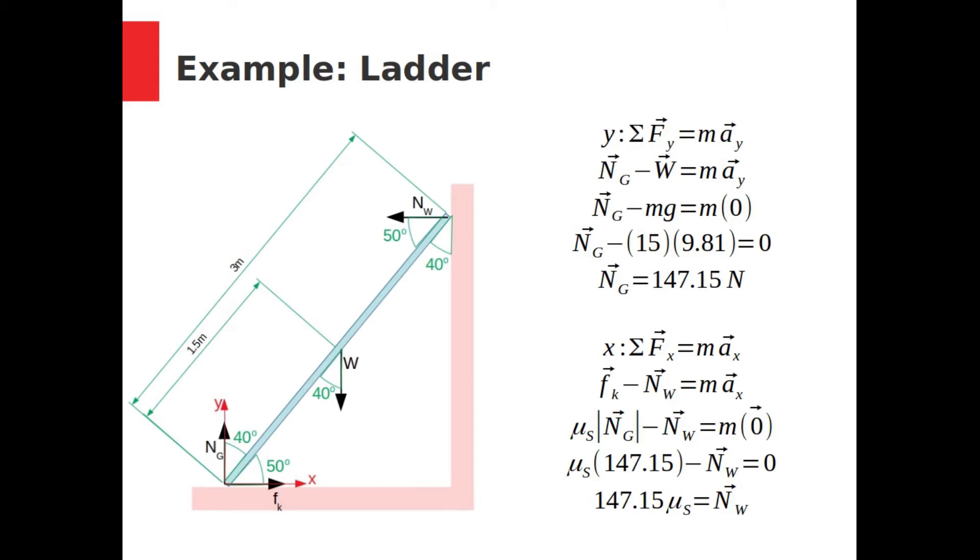Next, the x-direction. Static friction points right and the normal force from the wall points left. These also cancel out to zero, but there are two unknown variables, the normal force from the wall and the coefficient of static friction.